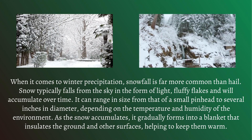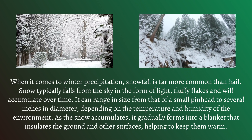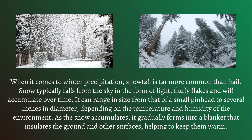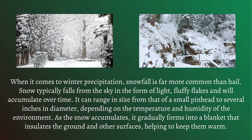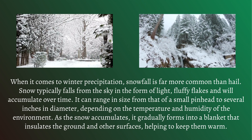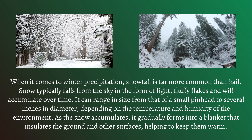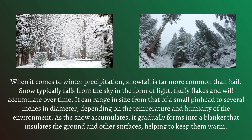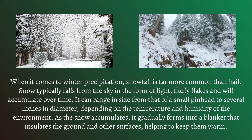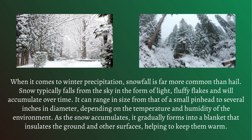Snow typically falls from the sky in the form of light, fluffy flakes and will accumulate over time. It can range in size from that of a small pinhead to several inches in diameter, depending on the temperature and humidity of the environment. As the snow accumulates, it gradually forms into a blanket that insulates the ground and other surfaces, helping to keep them warm.